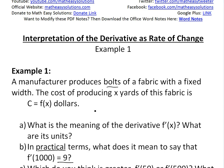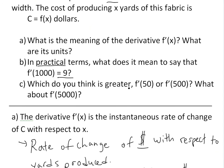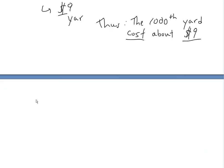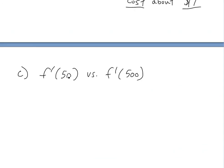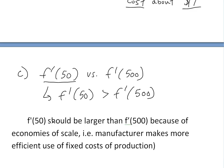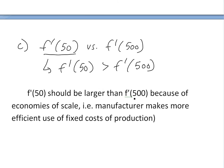Part (c) asks: which is greater, the derivative at 50 yards or at 500 yards, and what about at 5,000 yards? Comparing f'(50) versus f'(500): f'(50) should be larger than f'(500), and this comes down to economics of scale — I actually covered this in my Economics 101 video, link below.